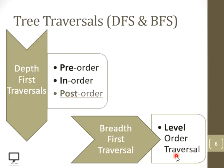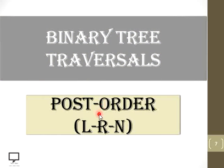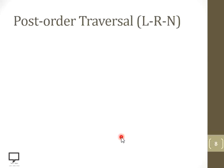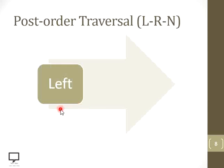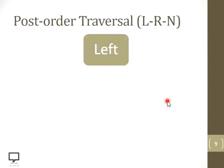Here I am focusing on post-order traversal. In post-order binary tree traversal, we follow the sequence: left subtree, right subtree, and then the root node. So first you traverse the left subtree, then the right subtree, and lastly the root node — that is what we follow while traversing a binary tree in post-order.